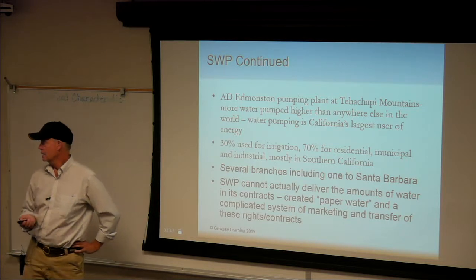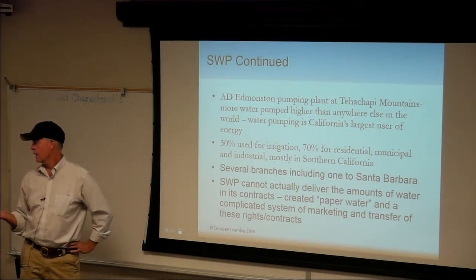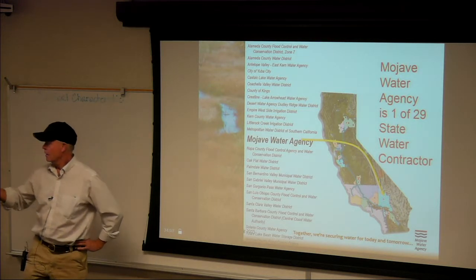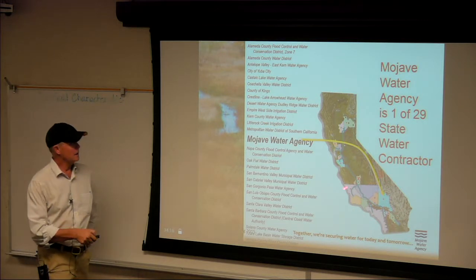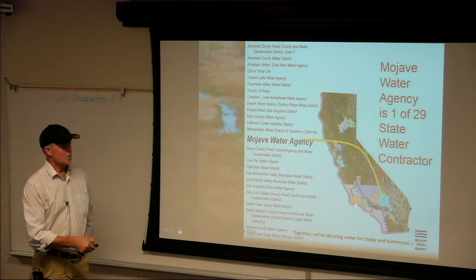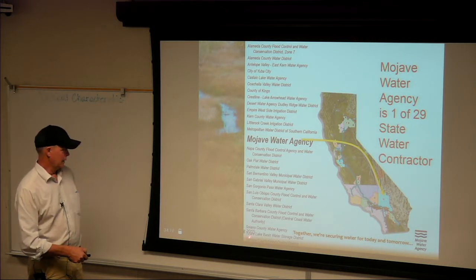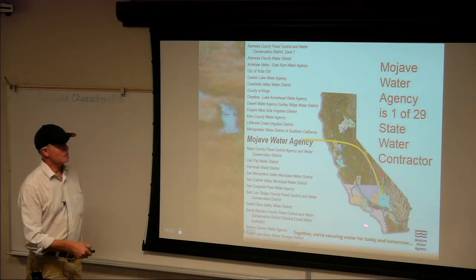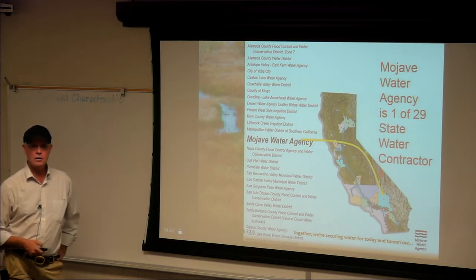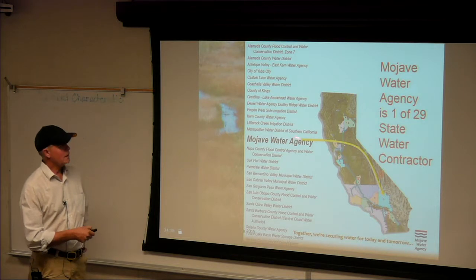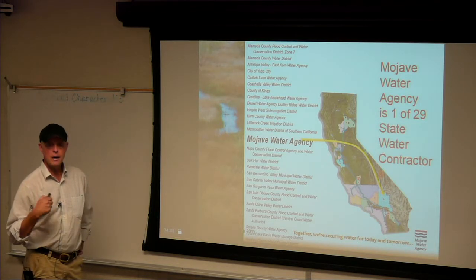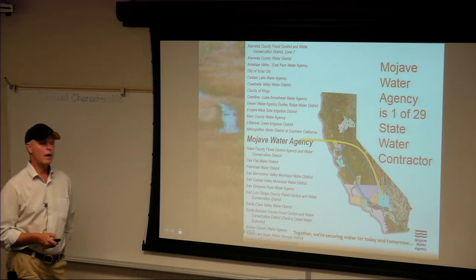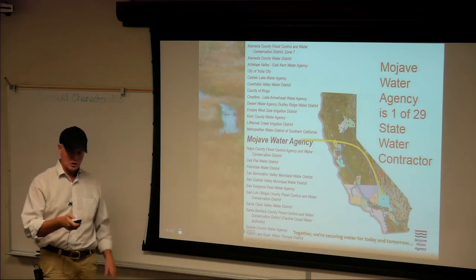The State Water Project cannot actually deliver the amounts of water in its contracts — they created paper water. Mojave Water Agency is one of the agencies designated to manage the water. Matt Howard, one of our co-teachers, is going to talk about what they do — managing state water, but more importantly managing the groundwater, because that's ultimately where it comes from even if we recharge it.